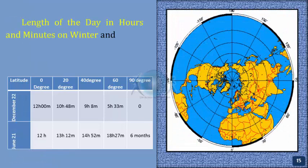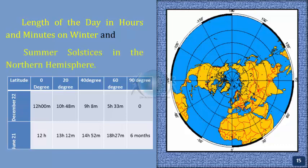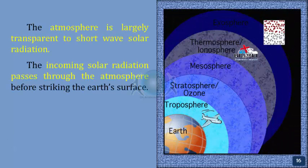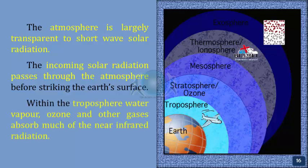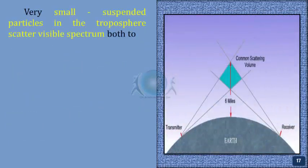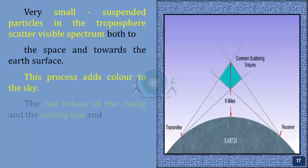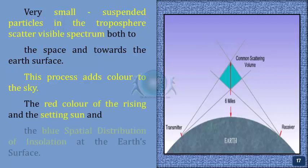The passage of solar radiation through the atmosphere. The atmosphere is largely transparent to shortwave solar radiation. The incoming solar radiation passes through the atmosphere before striking the Earth's surface. Within the troposphere, water vapor, ozone and other gases absorb much of the near-infrared radiation. Very small suspended particles in the troposphere scatter visible spectrum both to space and towards the Earth's surface. This process adds color to the sky — including the red color of the rising and setting sun and the blue sky.